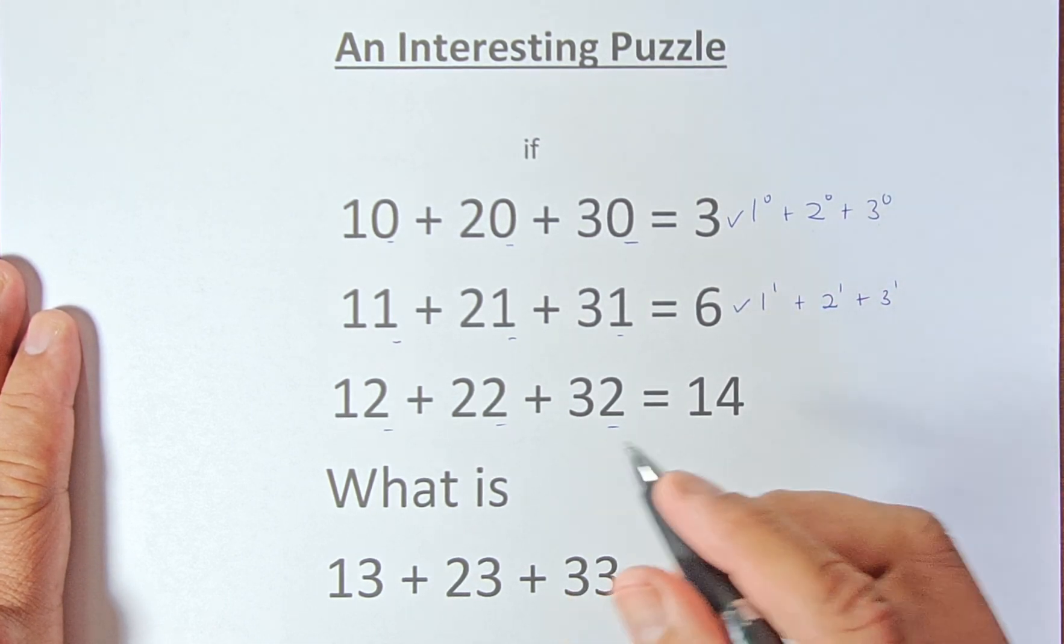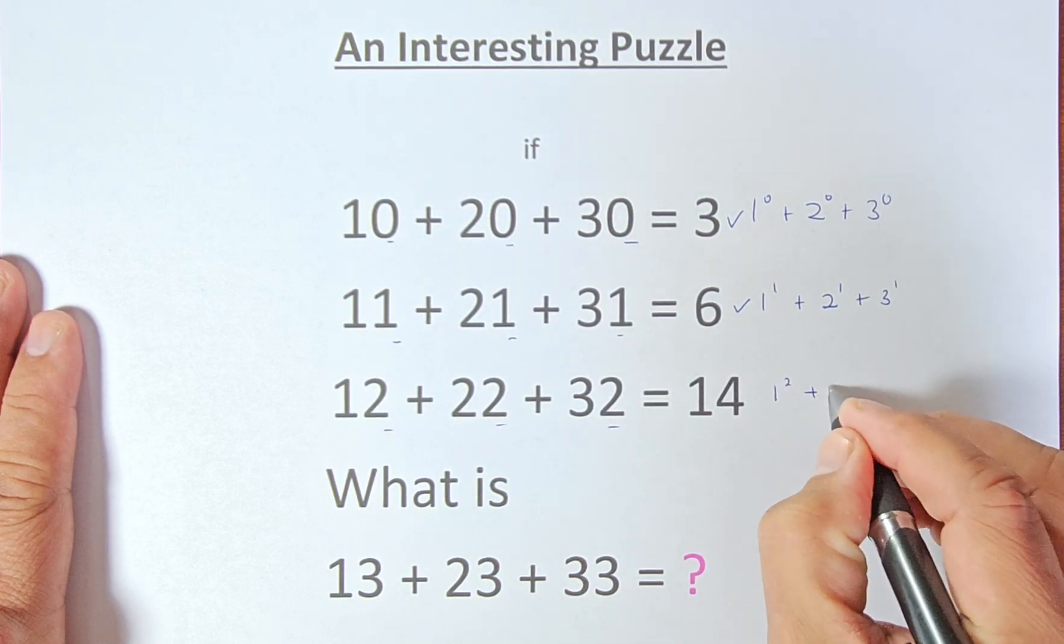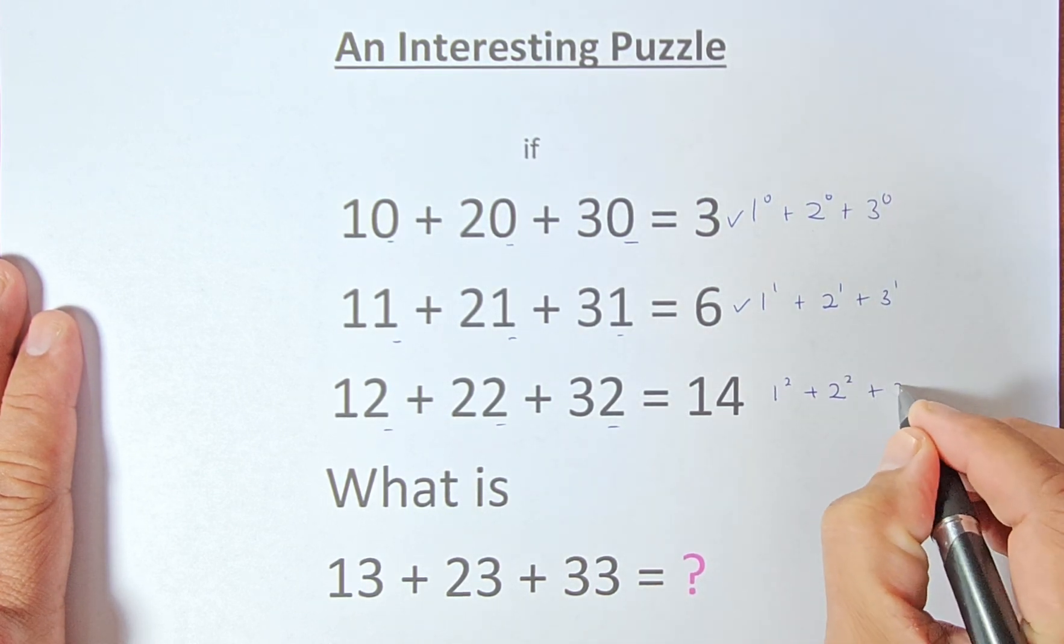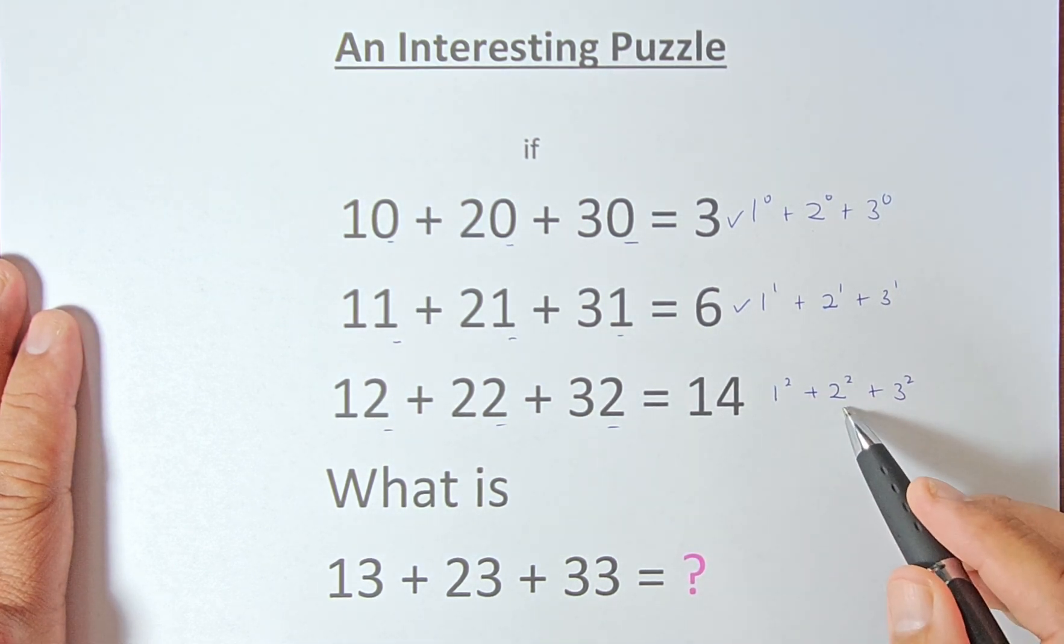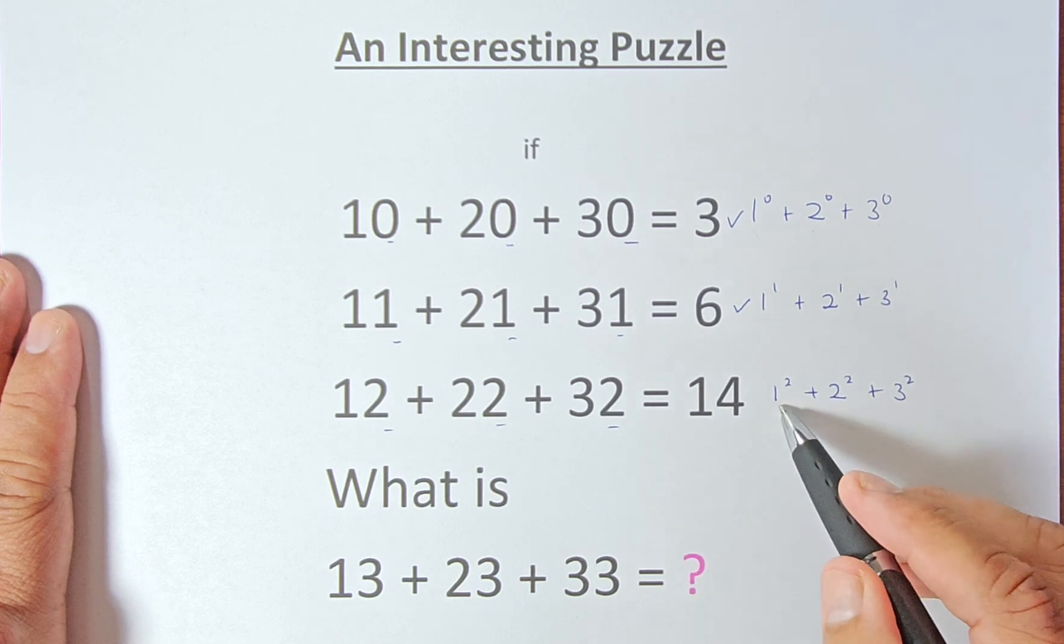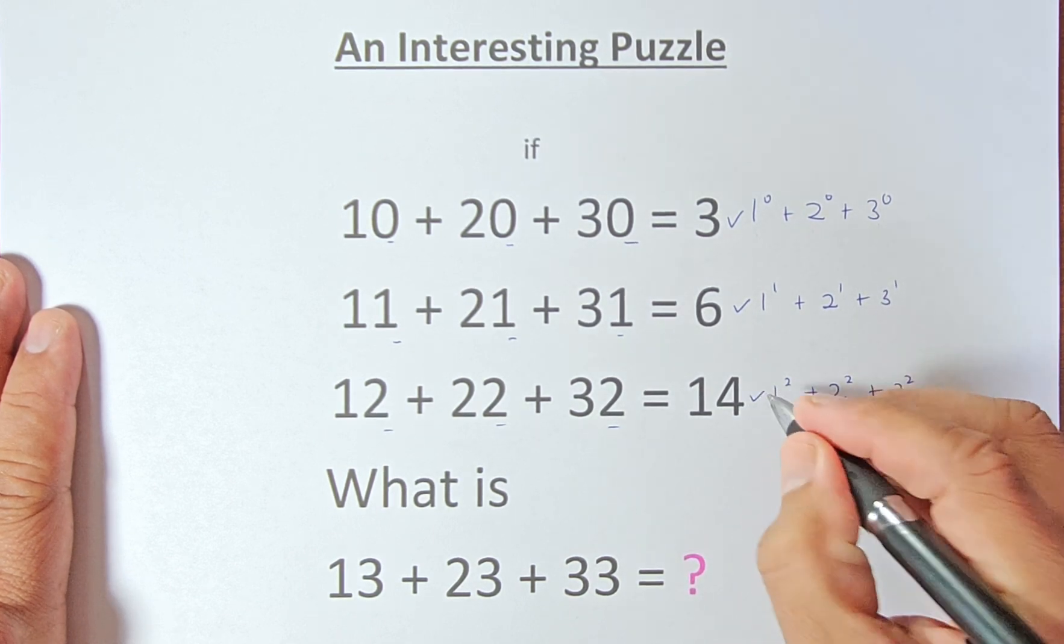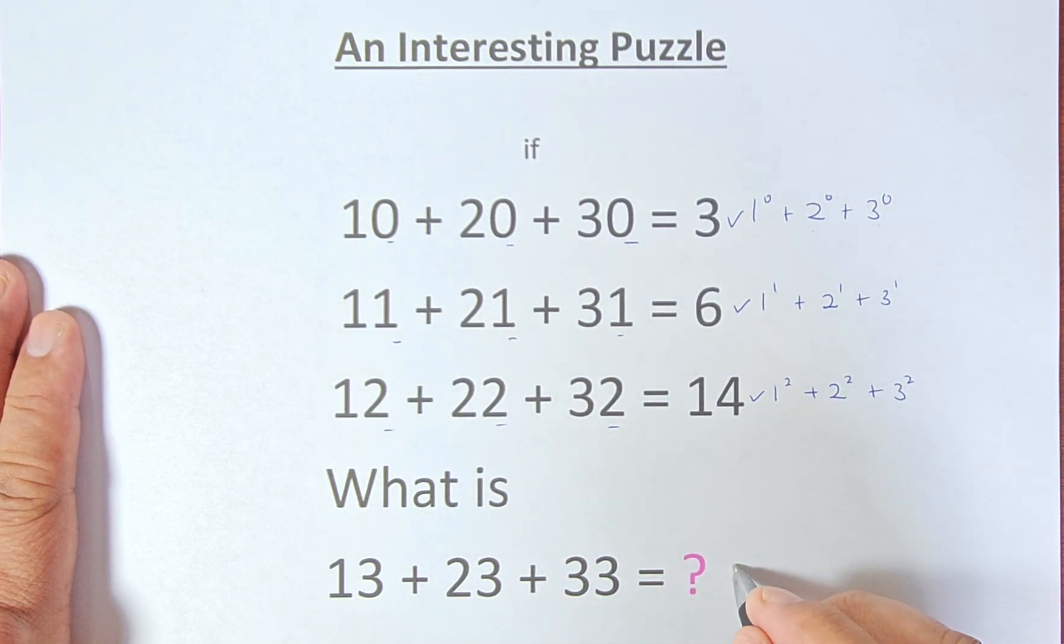Similarly, in the third row, 12, 22, 32. So we're going to be 1 to the power of 2 plus 2 to the power of 2 plus 3 to the power of 2. So 1 to the power of 2 is 1, plus 4, 2 squared is 4, plus 3 squared is 9. So 1 plus 4 plus 9, that will give us 14.